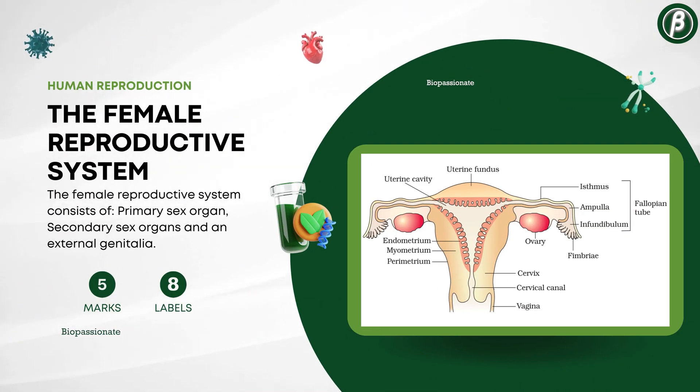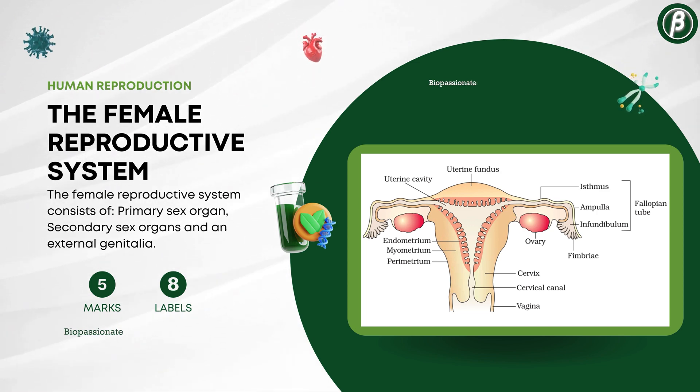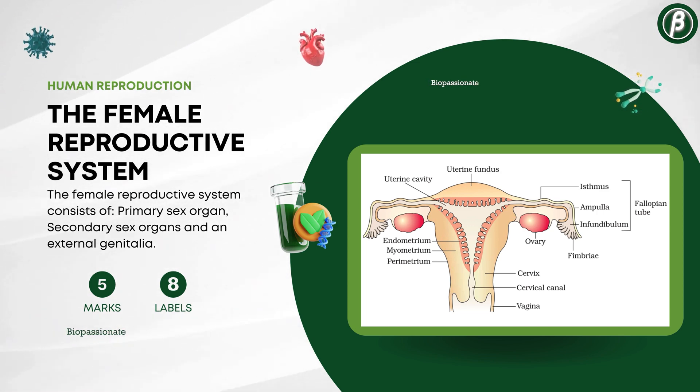Number 5: The female reproductive system, for 5 marks with a minimum of 8 labels.